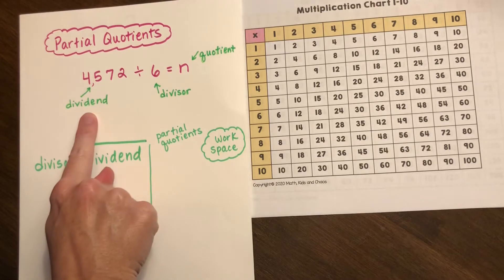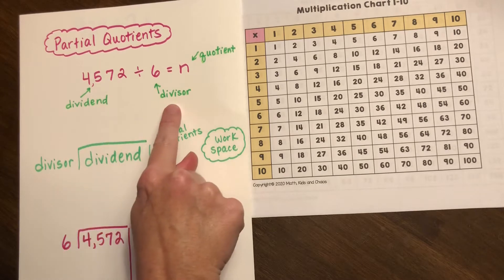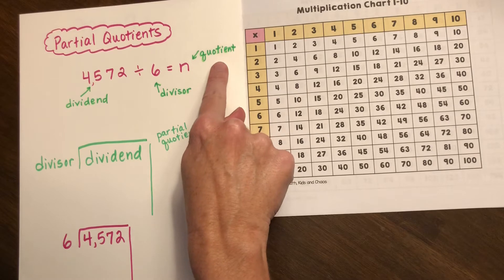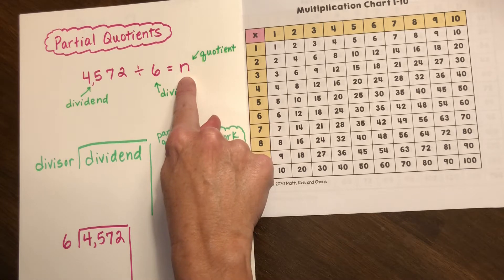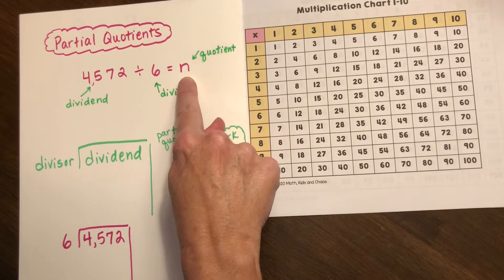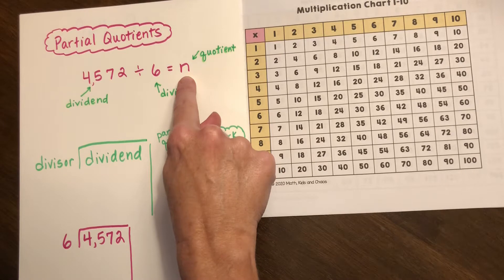Remember that a dividend is the number being divided. The divisor tells us the number of parts that it's being divided into and the quotient tells us the number within each part. In this example there is the variable n because we do not have the answer and n represents the unknown number.